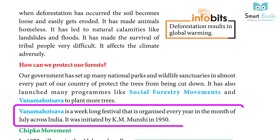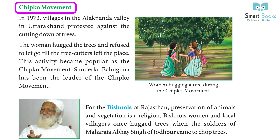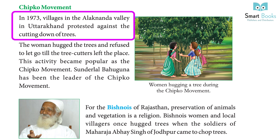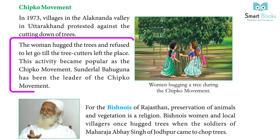Van Mahotsava is a week-long festival organized every year in the month of July across India. It was initiated by K.M. Munshi in 1950. In 1973, villagers in the Alaknanda Valley in Uttarakhand protested against the cutting down of trees. The women hugged the trees and refused to let go until the tree-cutters left. This movement became popular as the Chipko Movement, with Sundarlal Bahuguna as its leader.